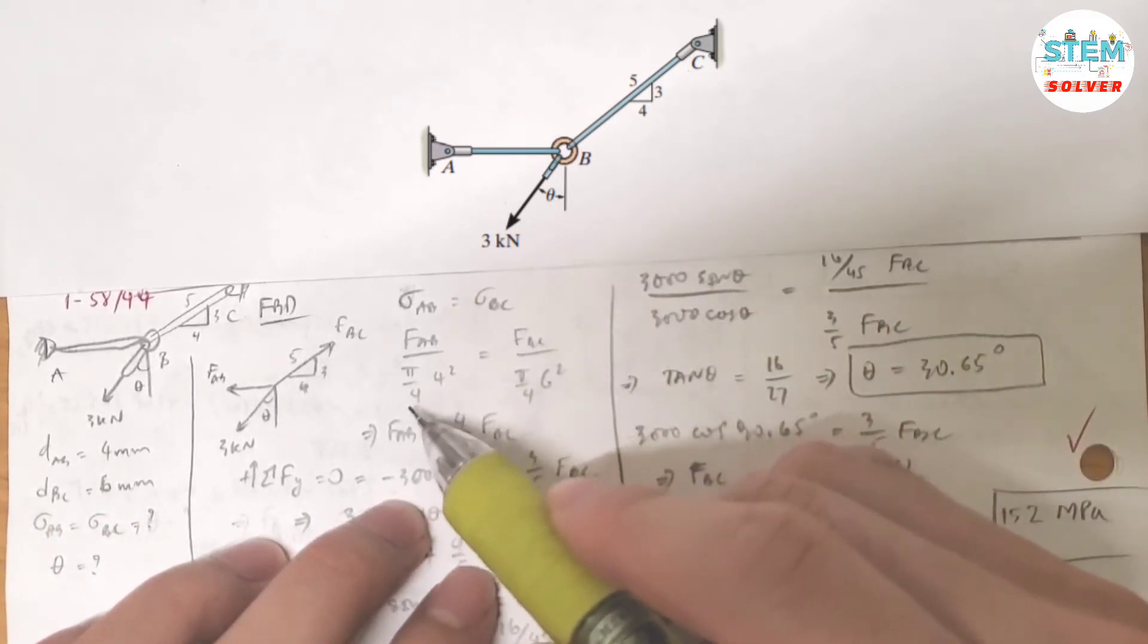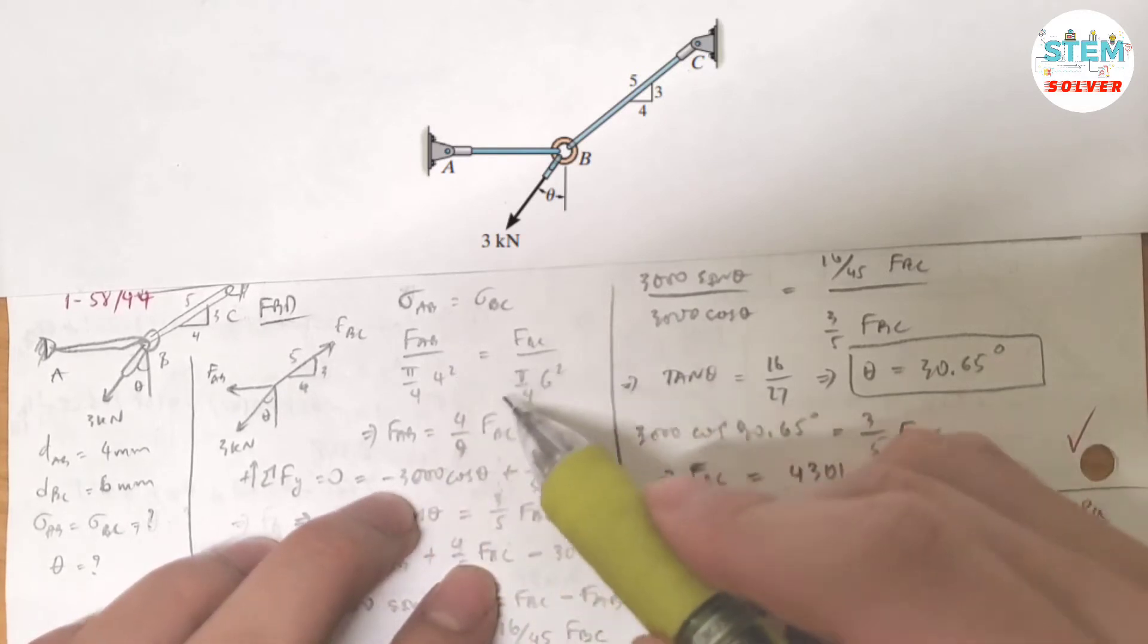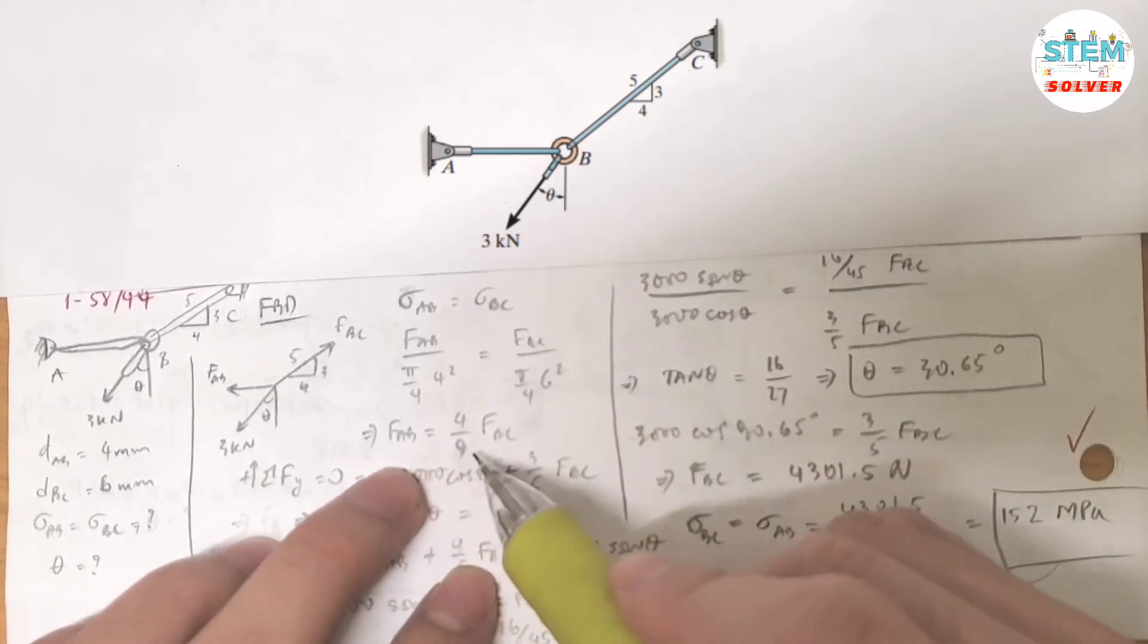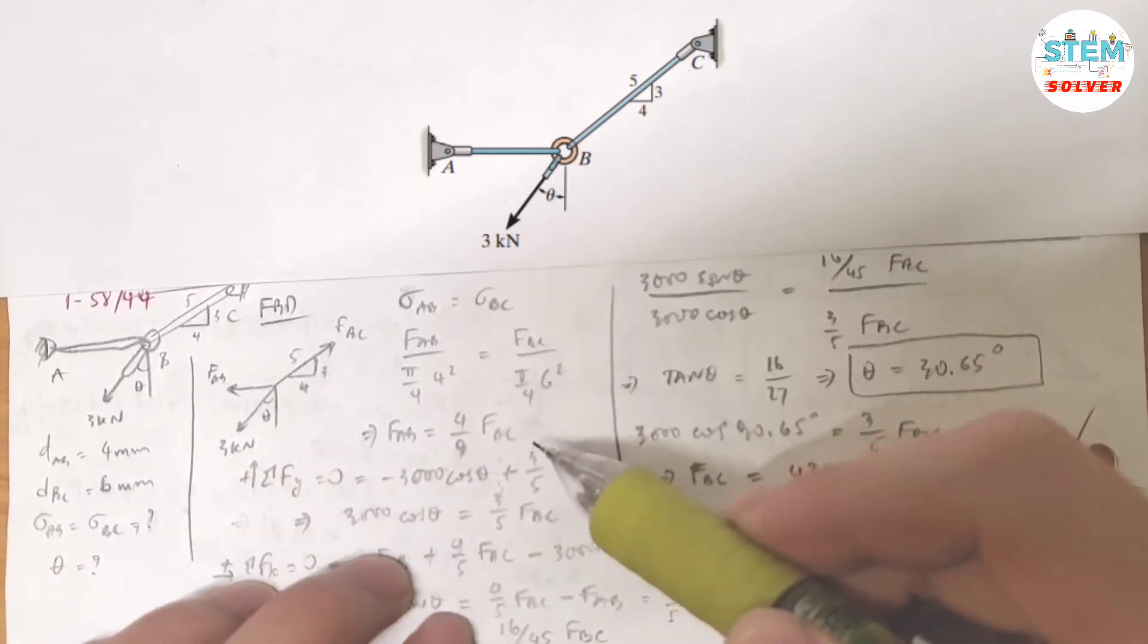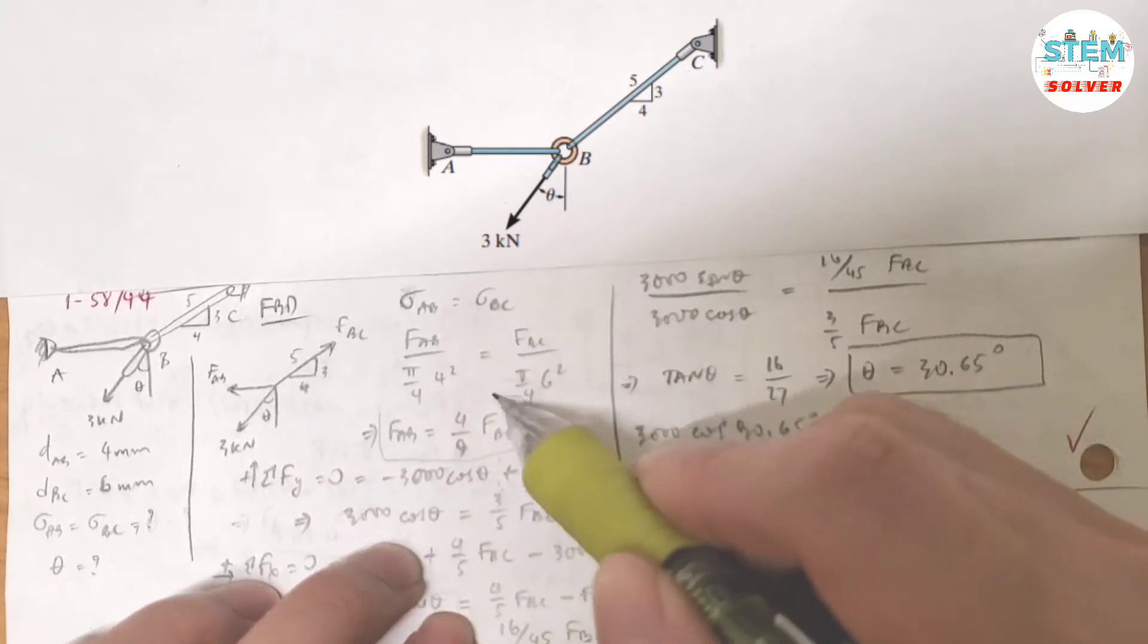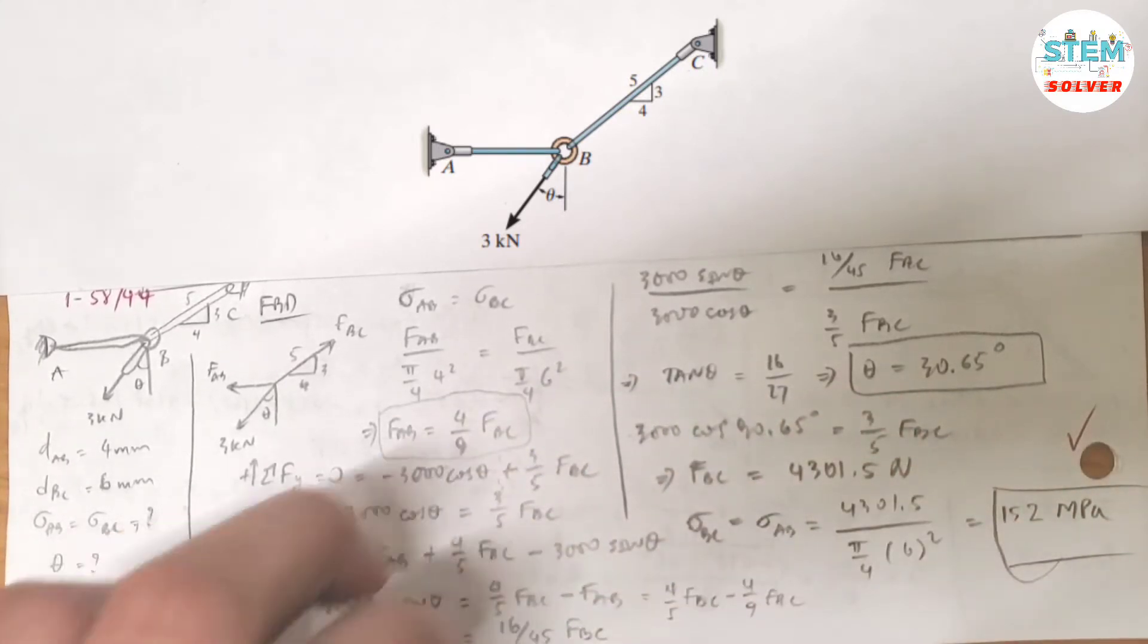So multiply π/4 on both sides and simplify this. I got FAB equals 4/9 FBC. So keep in mind this because this will help you solve the problem.